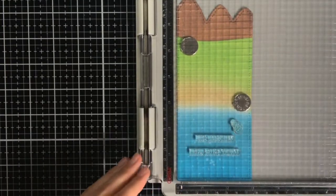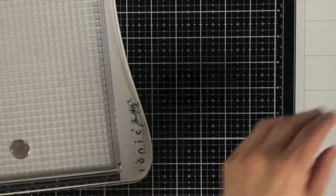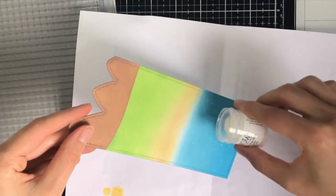For the stamping I am using Versamark ink. This is a clear sticky ink which is perfect for embossing powders. And for embossing powder I'm using embossing powder from WOW, the opaque bright white.